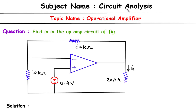Subject name: Circuit Analysis. Topic name: Operational Amplifier. The question is to find I_O in the op-amp circuit shown in the figure. Here in this op-amp circuit, we have to find I_O.